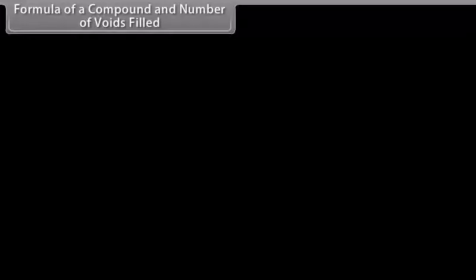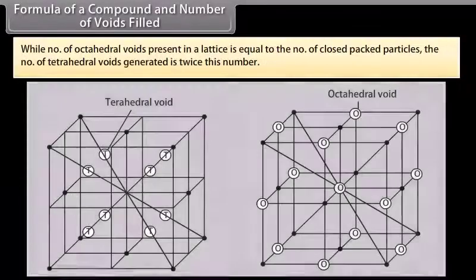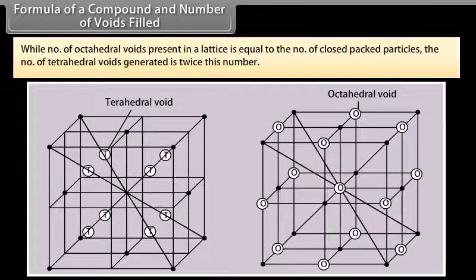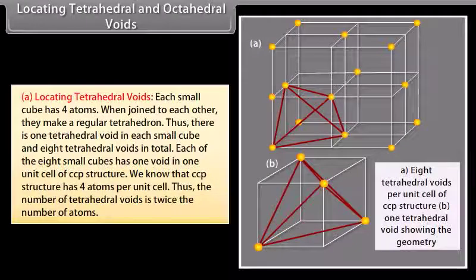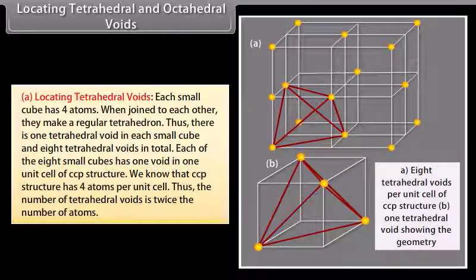The number of octahedral voids present in a lattice is equal to the number of close packed particles, while the number of tetrahedral voids generated is twice this number. To locate tetrahedral voids: each small cube has four atoms which when joined form a regular tetrahedron, giving one tetrahedral void per small cube and eight tetrahedral voids in total per unit cell. Since the CCP structure has 4 atoms per unit cell, the number of tetrahedral voids is twice the number of atoms.